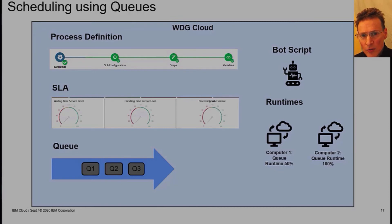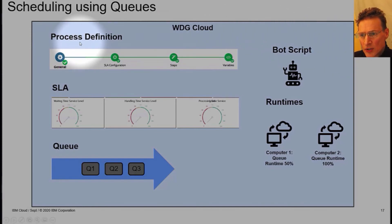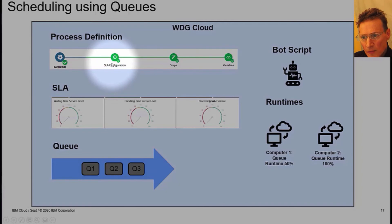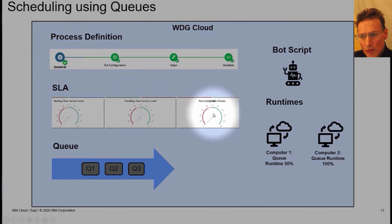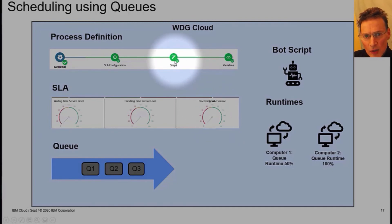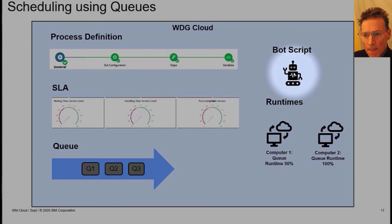Using a queue may be a more efficient way of running bots. In order to run a bot via a queue you need to create a process definition. A process definition has several components: it has an SLA configuration, which is essentially parameters on how long the bot should wait, how long it should run, and the overall time for both waiting and running. It should also contain a series of steps. Steps are essentially a sequence of bots - in the simplest case it's just one bot, but you could potentially have several bot scripts running one after the other, triggering each other in sequence.